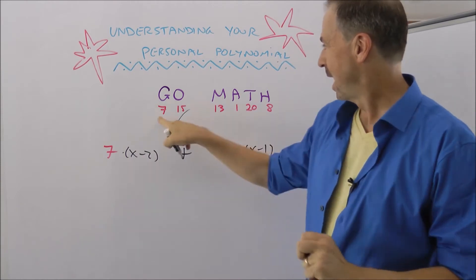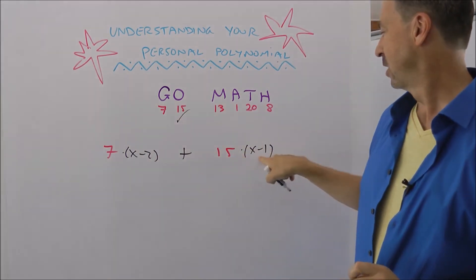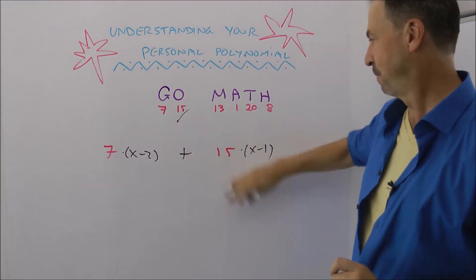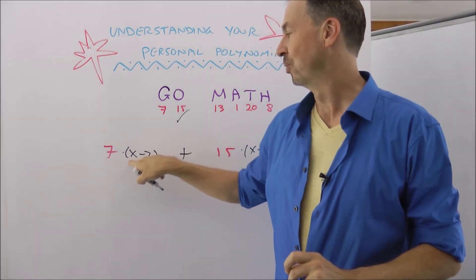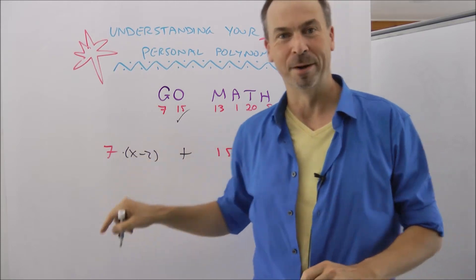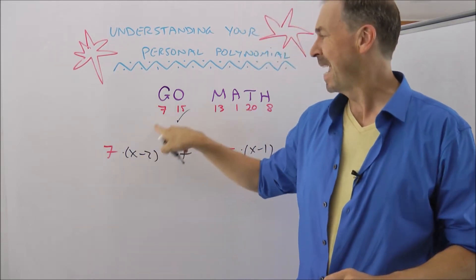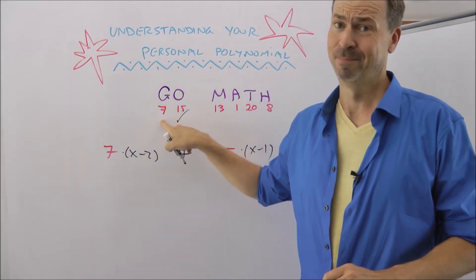And when x equals 1, I should get 7. I get 15 times 0, 1 minus 1. Yep, that piece disappears. 7 times, uh oh, 1 minus 2, negative 1. 7 times negative 1. I'm getting negative 7, not 7. Bother.